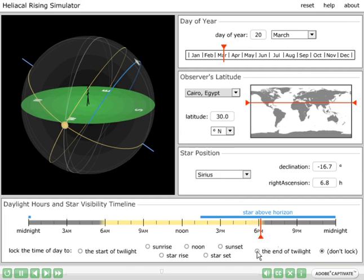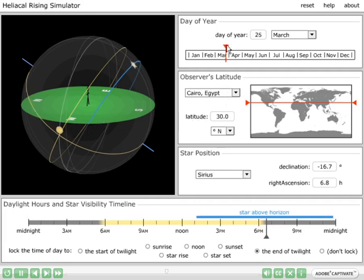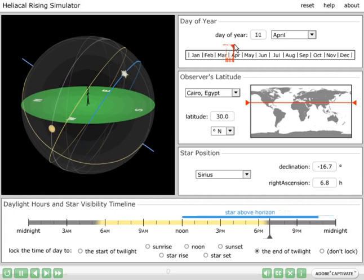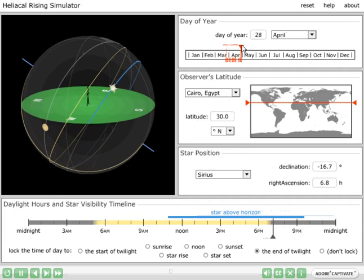I'm now going to lock the time here so that we're always simulating the end of twilight, and we see the sun is just a little bit below the western horizon. So if I continue to move forward during the year, note that Sirius gets closer to the western horizon at the time of the ending of twilight. This is occurring because stars rise and set four minutes earlier per day due to the Earth's revolution about the sun.